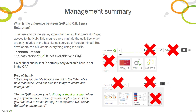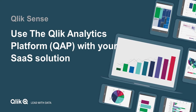Also note that these items are things used to create and change content. So the end result is that QAP enables you to display a sheet or a chart of an app on your website. But before you can display these items, you first have to create the app on a separate Qlik Sense Enterprise environment or use the APIs. That concludes this video. Thanks for watching.